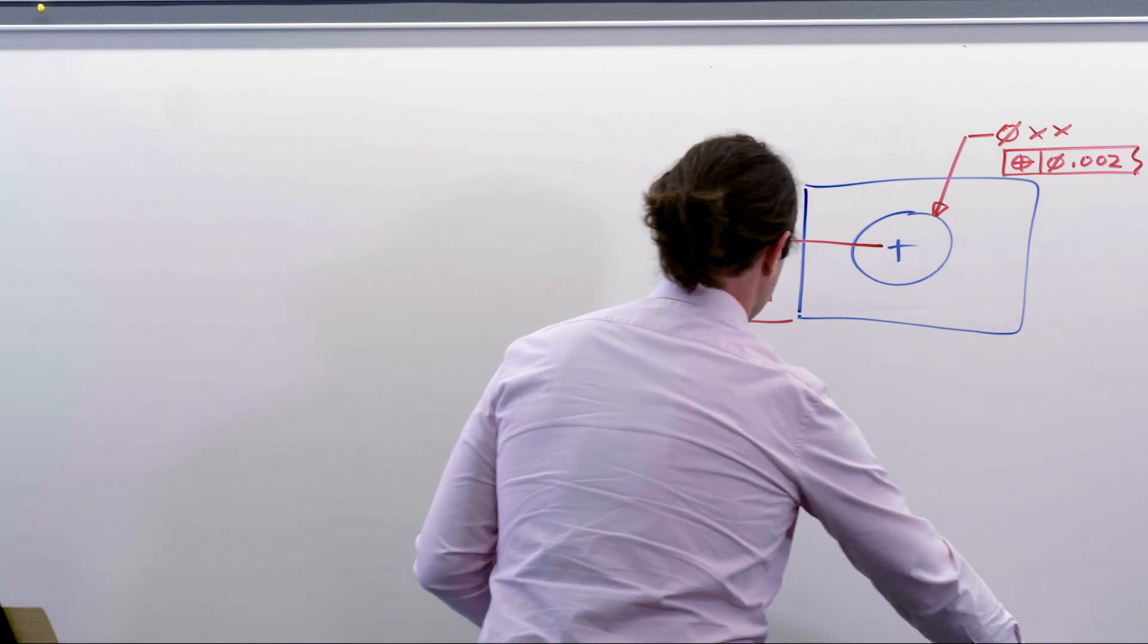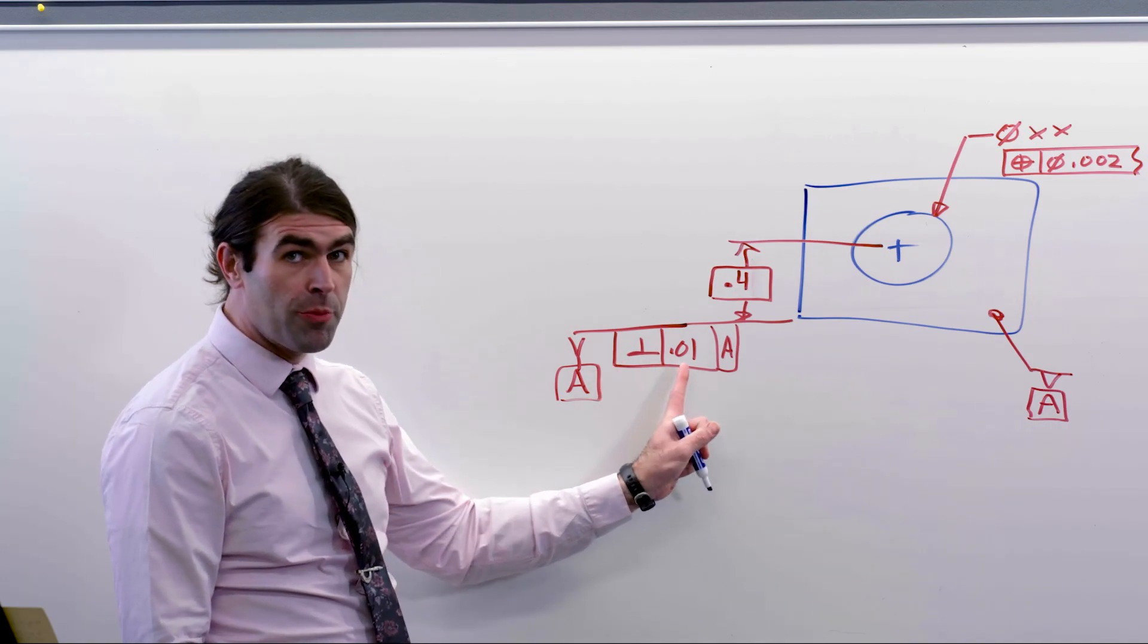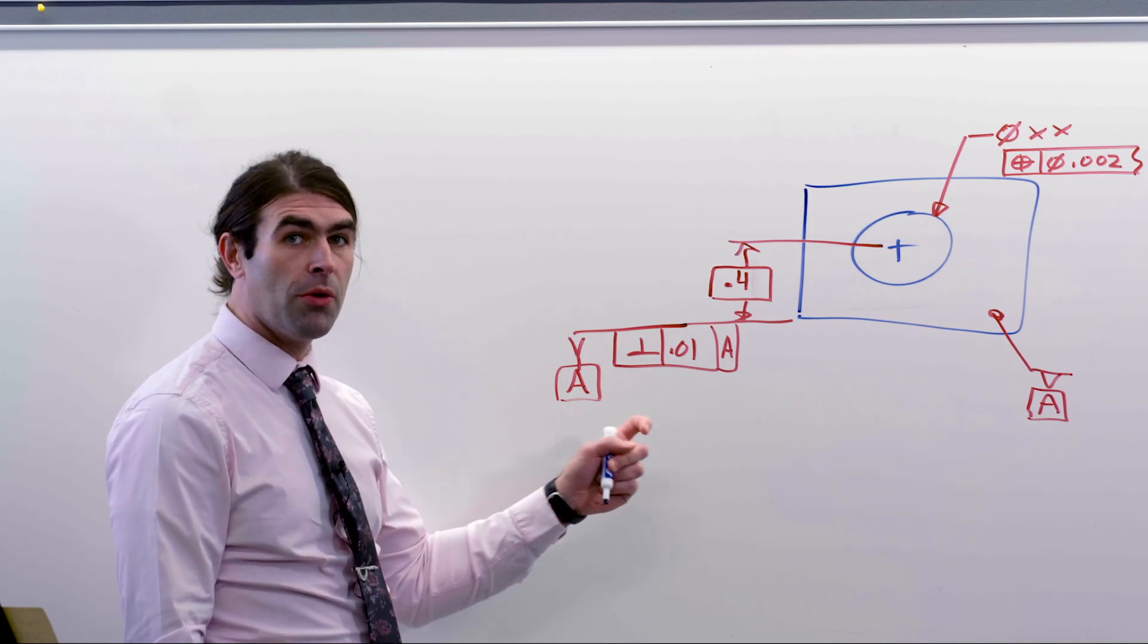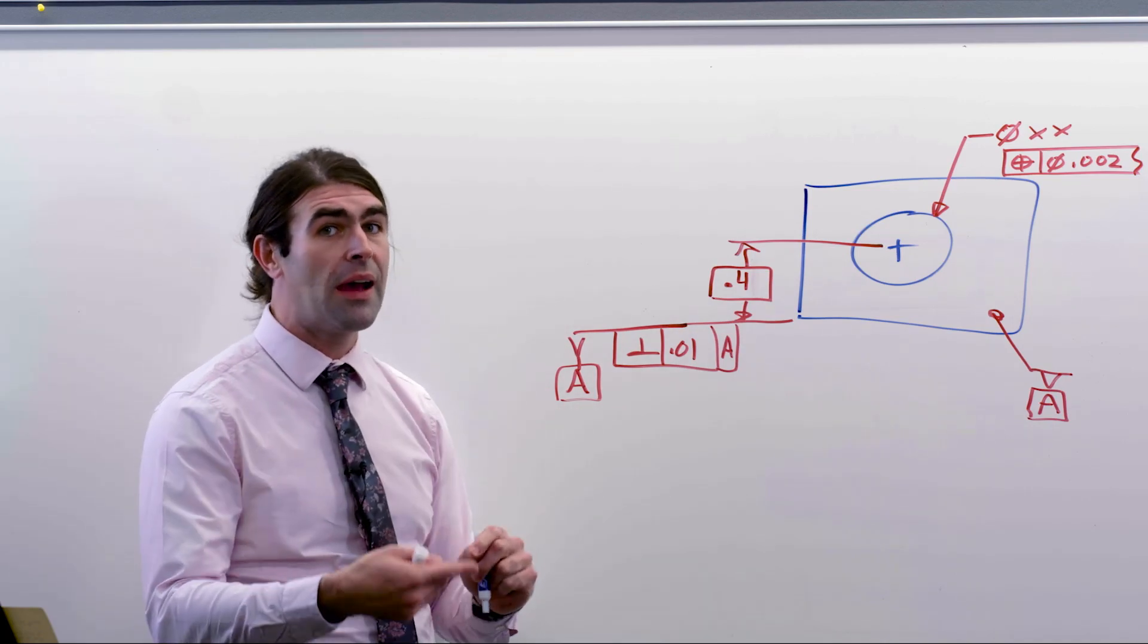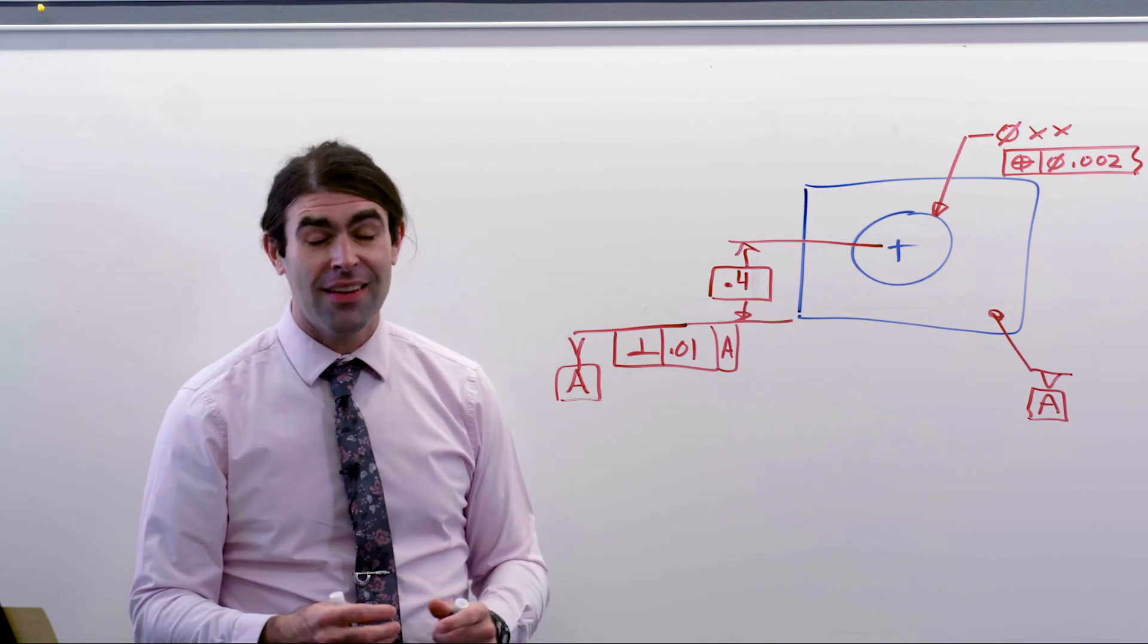So, what you'll see is something like this. I've got a perpendicularity feature control frame. I'm not putting the datum feature symbol on the feature control frame. This is how we would do it in the 1994 standard.